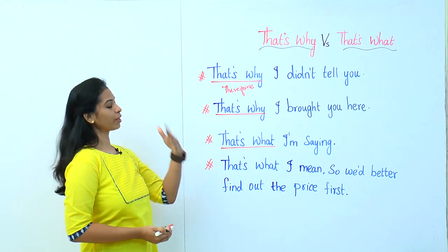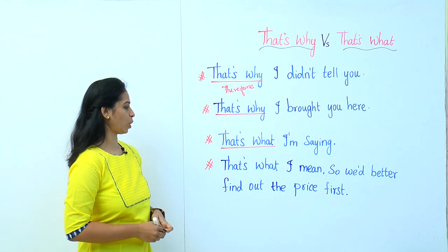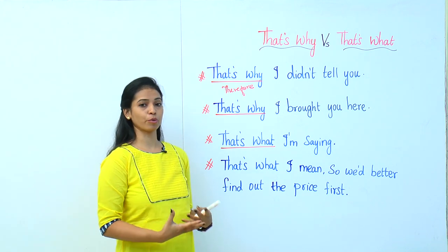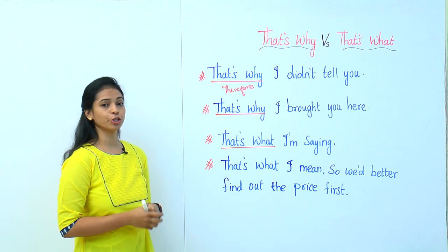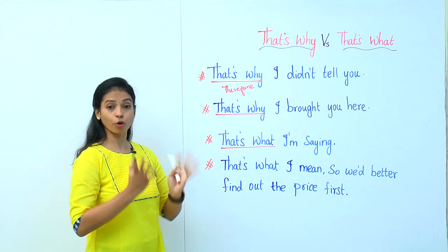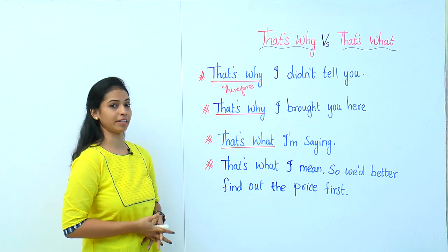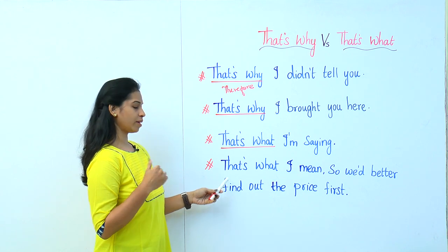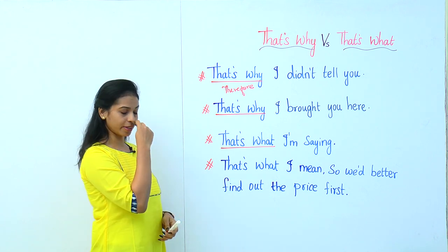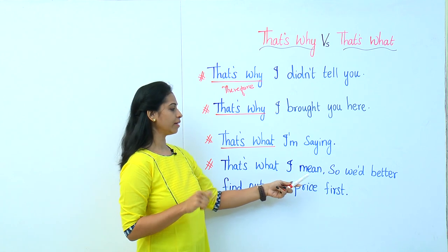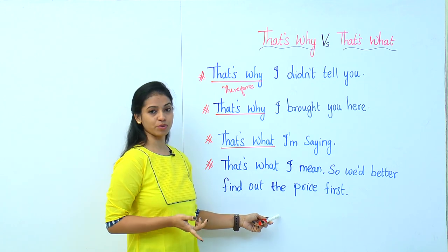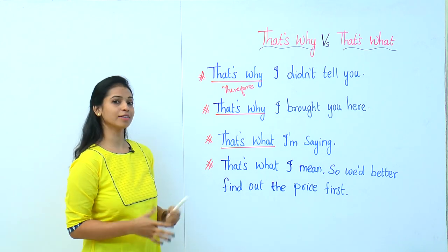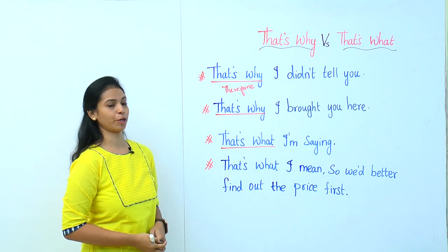For example, you will visit the mall and you will see something, but you don't have enough money. So that's what I mean, that's what I am saying. We would better find out the price first, before we go shopping. That's what I mean.